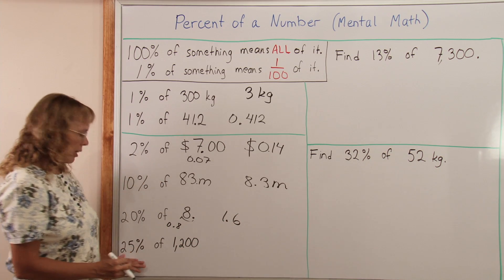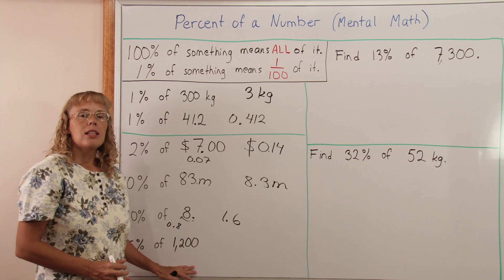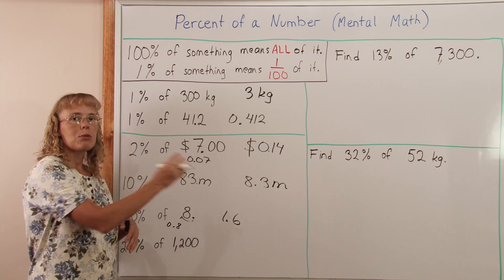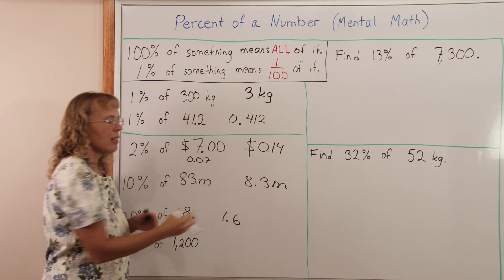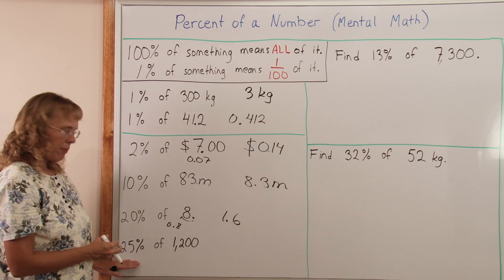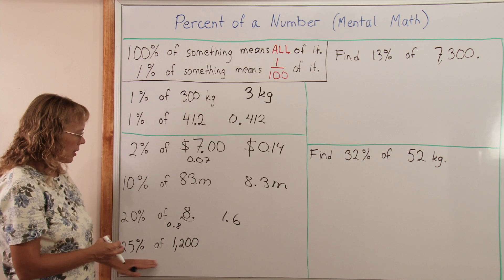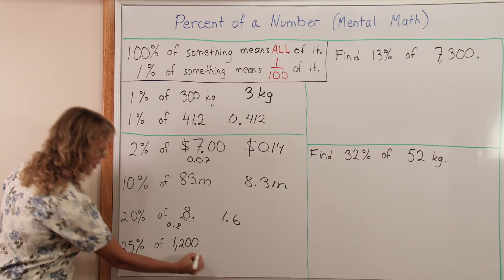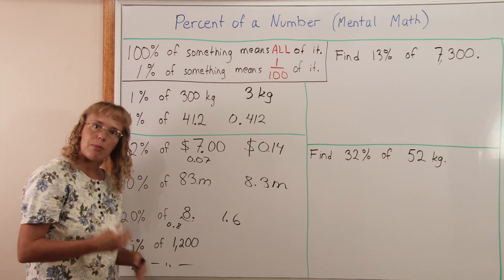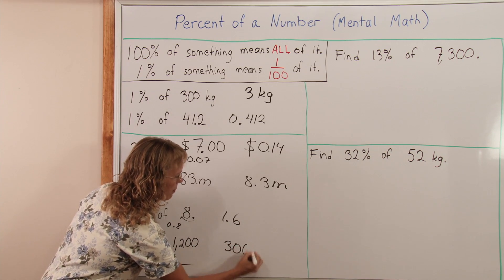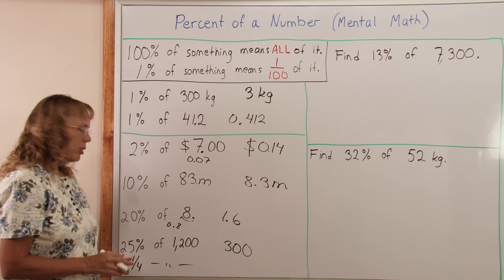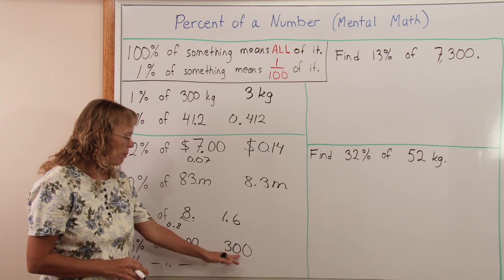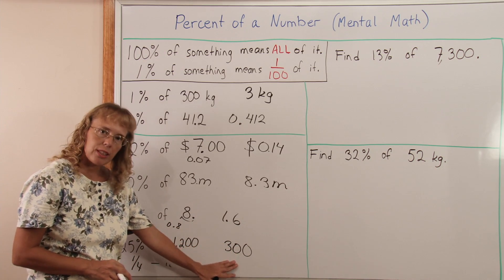25% of a number. Now 25 goes evenly into 100. We have 25, 25, 25, 25, making 100. So it's a fourth part of 100%. This is the same as finding one-fourth of it. So we can just take this number and divide by 4 and get 300. Similarly for 75%, you could first find 25% of it and then multiply that by 3 to get 75%.